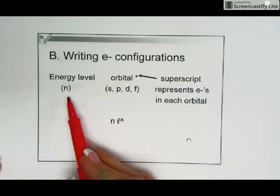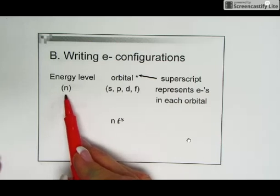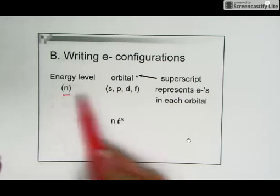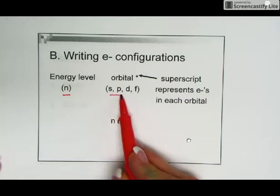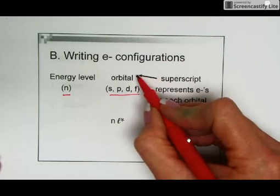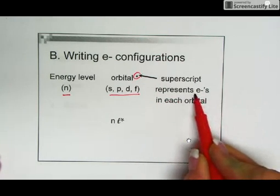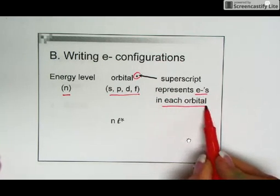We are still going to be using some things we learned about with the quantum numbers. We're going to be representing the energy level, representing our orbital shapes (S, P, D, and F), and we use a superscript that will indicate how many electrons are in each particular orbital.